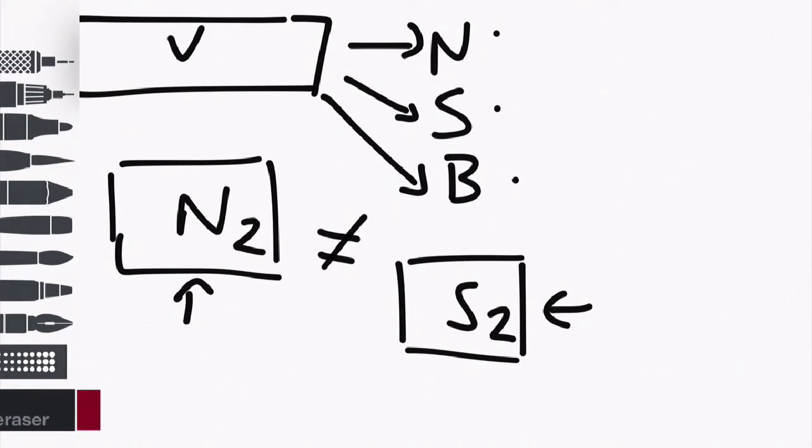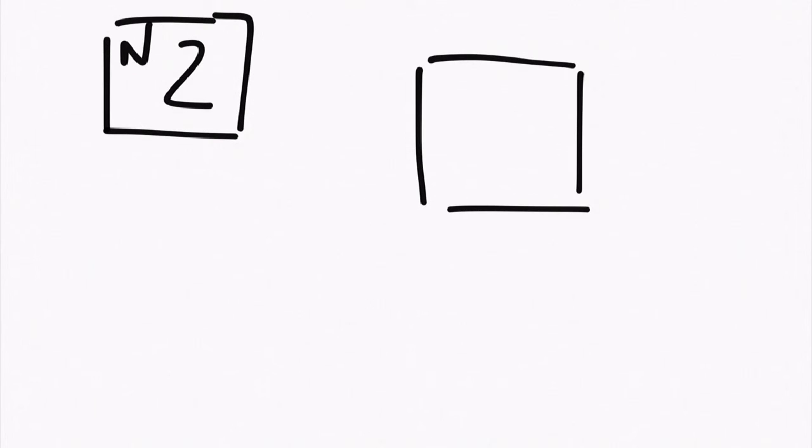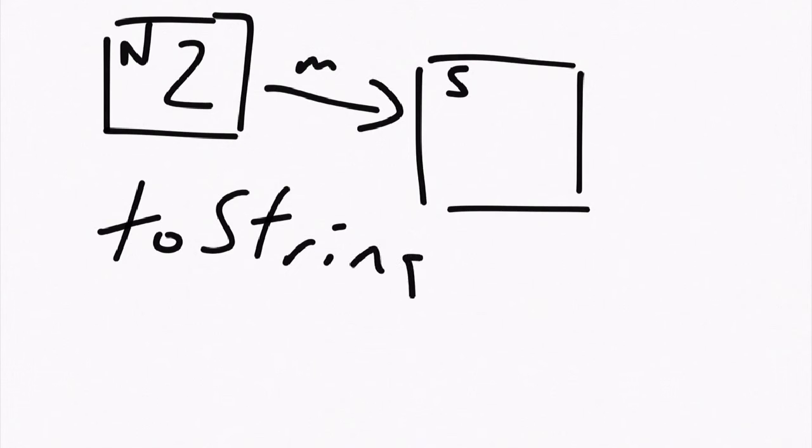Now that's not to say you can't convert between variable types. So for example, if I had my number two and I wanted to turn that into a string so that I could display it on a screen, well then I could run some kind of method on it that says something like toString, and that bit of code would then convert it to a string. Now again, remember these are not equal in a computer's eyes.